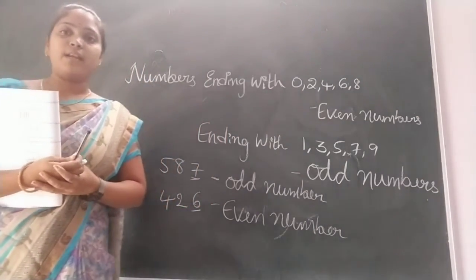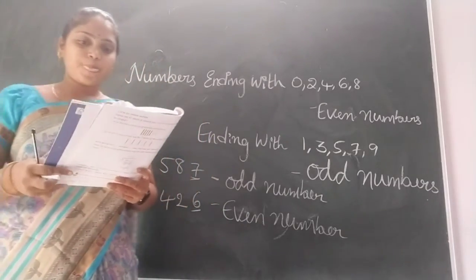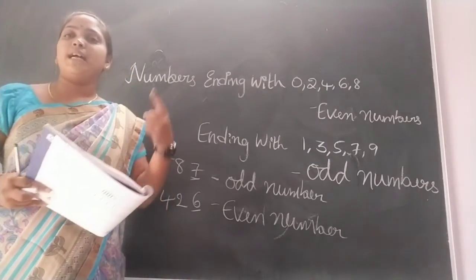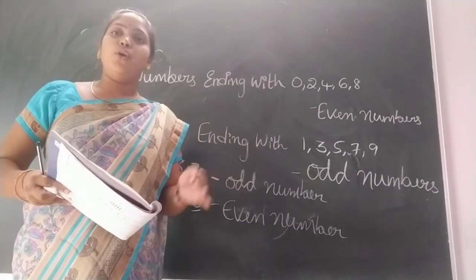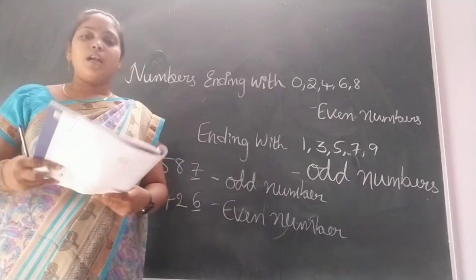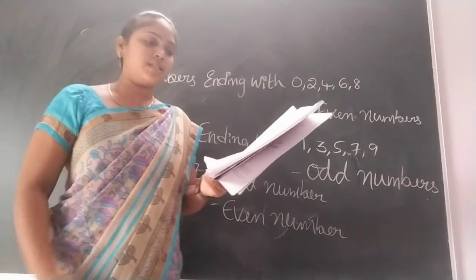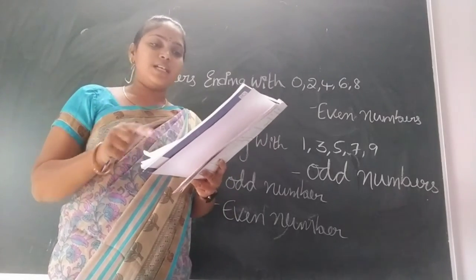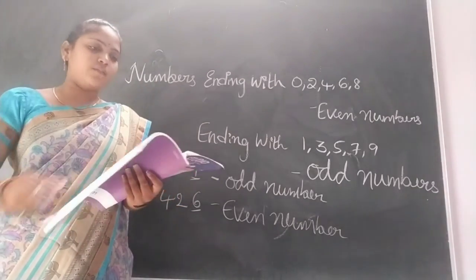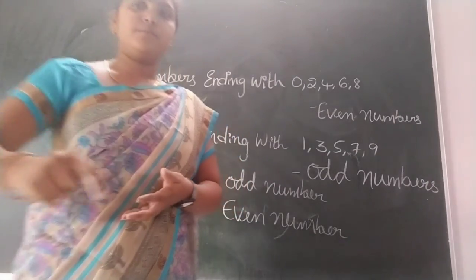So one more thing: what are even numbers? When we make groups of 2, those that can be grouped in 2s are called even numbers, and those that cannot be grouped in 2s are called odd numbers. And if we divide a number by 2 and it gives no remainder, it is even; if it gives any remainder, it is odd. Like that, you have to do children in 8.6 — check whether these are odd or even numbers and circle the even numbers. Thank you children. This is today's class. Have a nice day.